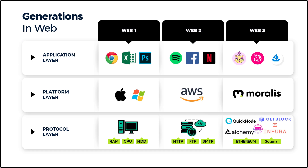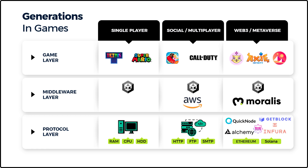Let's compare the generations of internet technology. We're currently departing Web2 and we're seeing many Web3 experiences. Technologies like Morales in the platform layer help to wrap all of the complexity of the protocol layer and allow us to build on top. Those applications that we build are the individual games like CryptoKitties, exchanges like OpenSea for NFTs, and Uniswap for trading currencies. Now it's not a perfect analogy, but let's take a look at the generation in games as compared to what we saw with Web2 and Web3. We're currently seeing a lot of social and multiplayer experiences and as Web3 expands, we're seeing more applications and games built on top.